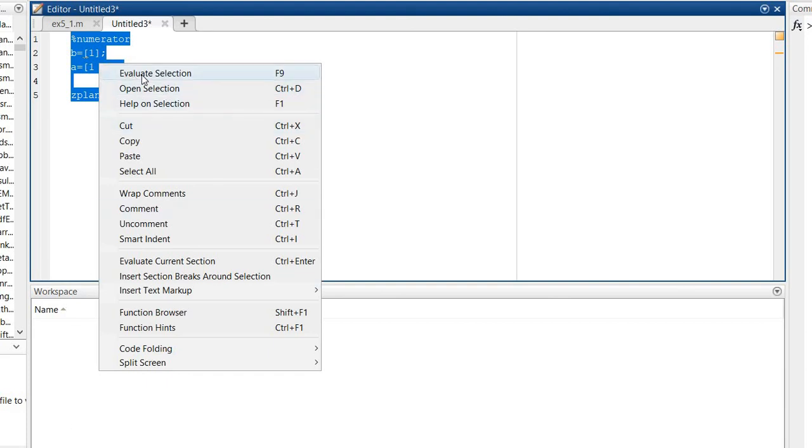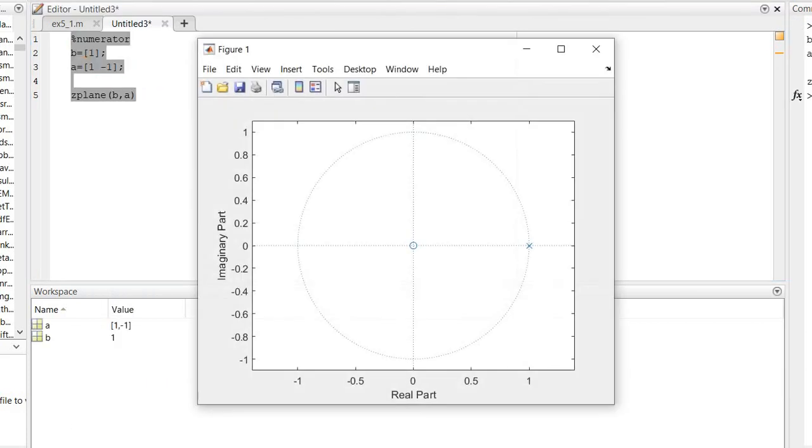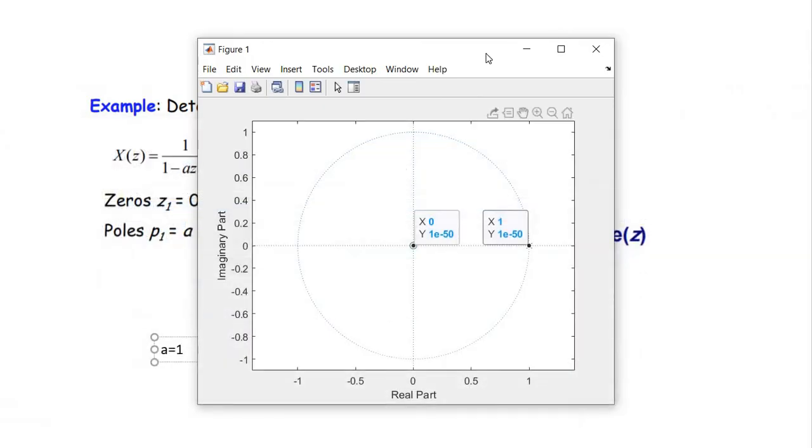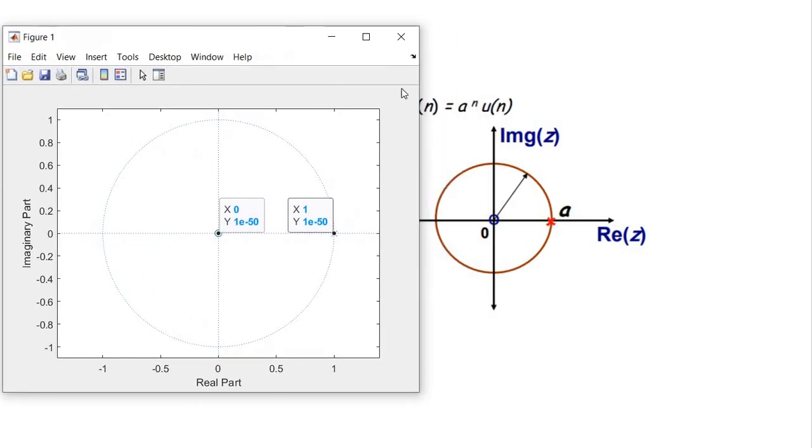We're going to evaluate the selection now. As you can see, these are the results: at zero and then at one. It's the same as in here.